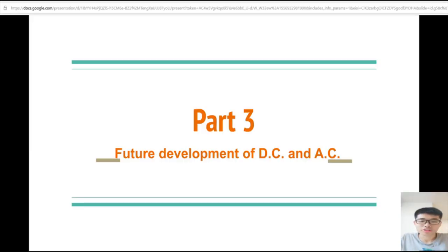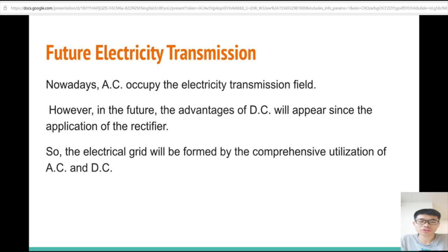Now, this is my part, future development of DC and AC. Nowadays, AC occupies the electricity transmission field. The advantage of AC transmission is that the generation of electricity is AC, and the voltage of AC can be easily changed. However, in the future, the advantage of DC will appear since the application of the reactive frame. So, the electrical grid will be formed by the comprehensive utilization of AC and DC. First, let us see the future application of DC, high voltage direct current, HVDC.